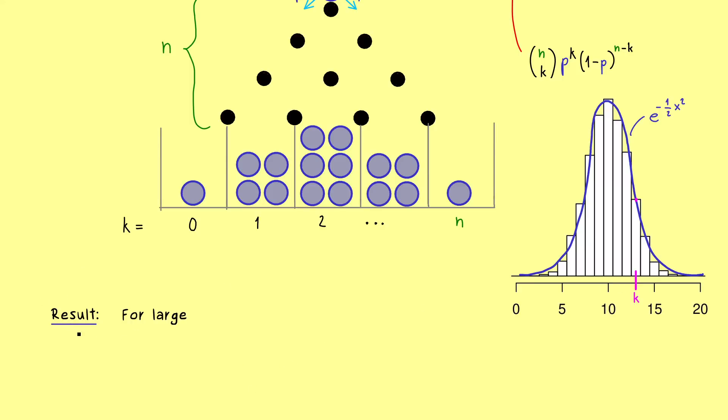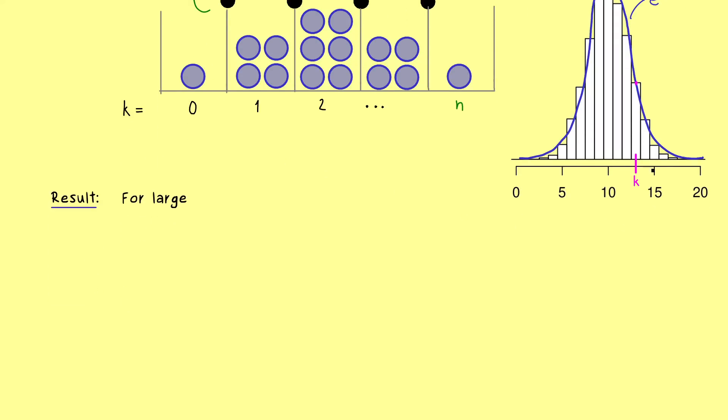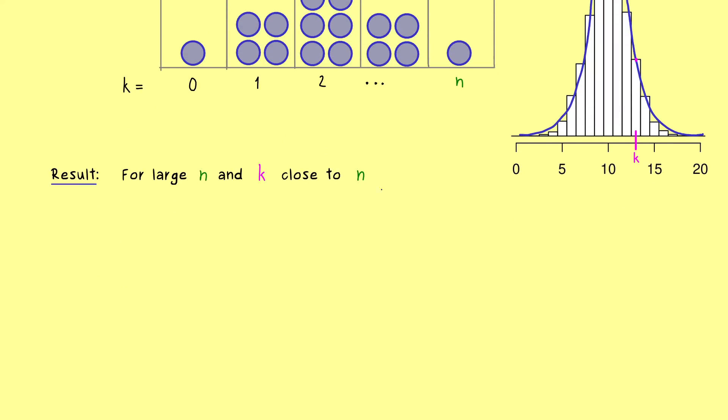So let's formulate the rough result we have here. If n is large enough, and if k is close enough to the middle point. And the middle is exactly the expected value of the binomial distribution, which is n times p. And then the result we get is that the probability to get k in the binomial distribution is roughly the same to get k in the normal distribution.